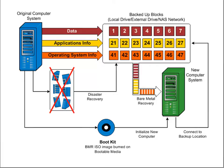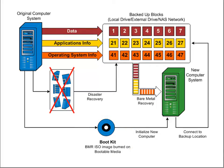The ArcServe UDP Agent for Windows utilizes a boot kit utility to combine a WinPE, or Windows Pre-Installation Environment, image and ArcServe UDP Agent image to create a BMR ISO image. This ISO image is then burned onto bootable media. When you perform a bare metal recovery, the ArcServe UDP Agent bootable media — CD, DVD, or USB stick — is used to initialize the new computer system and allow the bare metal recovery process to begin.